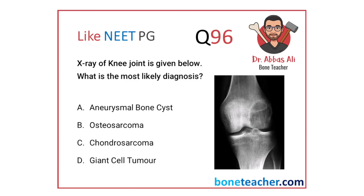Welcome back to my channel. Let's look at this MCQ: an X-ray of a knee joint is given. What is the most likely diagnosis? The options are aneurysmal bone cyst, osteosarcoma, chondrosarcoma, and giant cell tumor. There is an X-ray image here, and you have nothing to go by other than the image itself. This is a pure spotter question with no clinical history or background — just a plain X-ray.